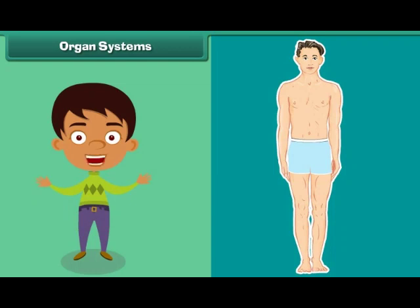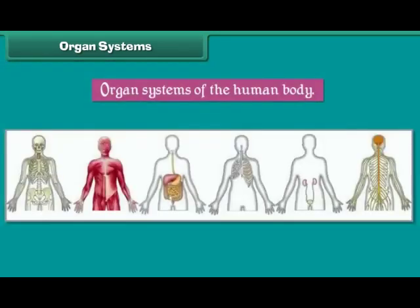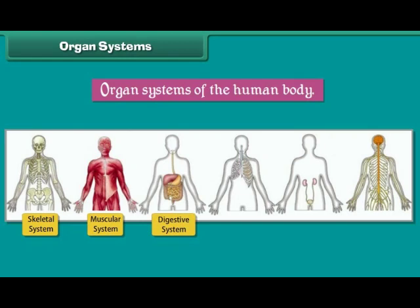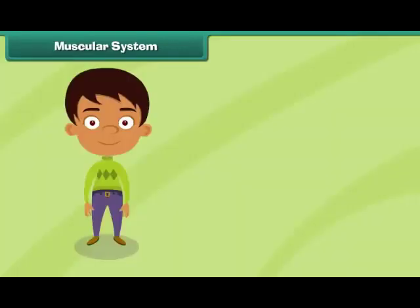Organ systems: The internal organs of the human body are grouped together to form different organ systems. Each organ system performs a special function. Some important organ systems of the human body are the skeletal system, muscular system, digestive system, respiratory system, excretory system, and nervous system. Let us now learn how each organ system works.